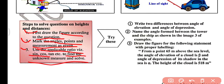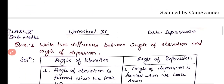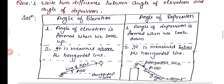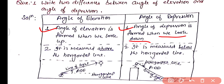You will also need to learn the values from the trigonometry table. Now we have three questions to discuss. Question one: write two differences between angle of elevation and angle of depression. The first difference is that the angle of elevation is formed when we look up, while the angle of depression is formed when we look down. The second difference is that the angle of elevation is measured above the horizontal line, while the angle of depression is measured below the horizontal line.